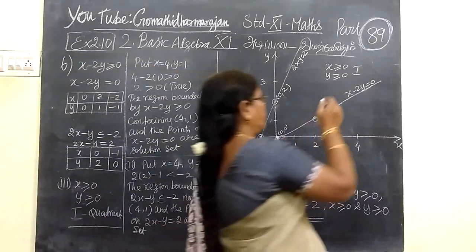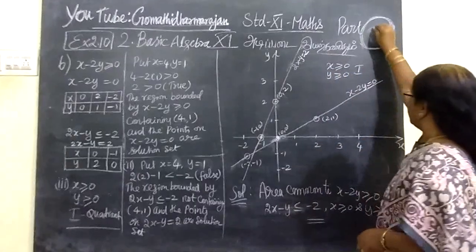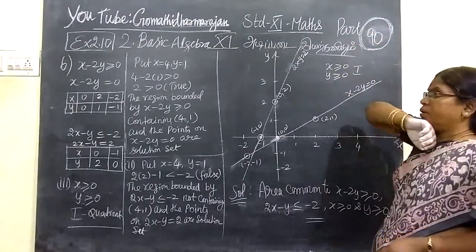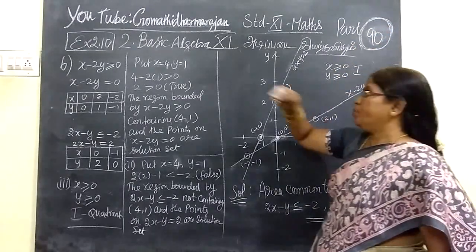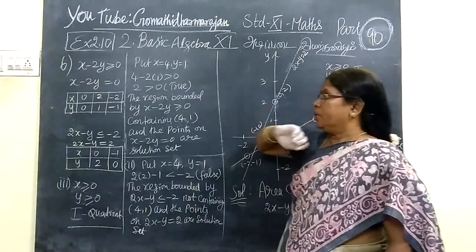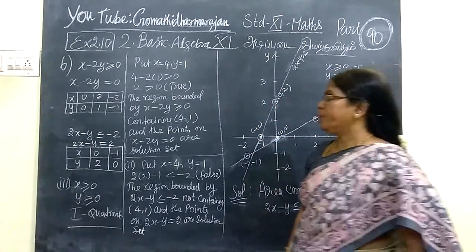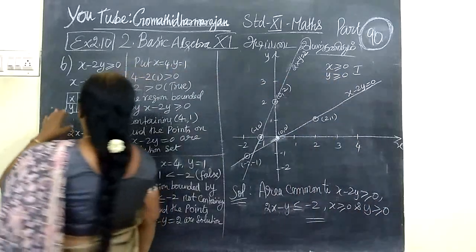So, now we see next part which is part 19 and we exercise 2.10 basic algebra as a question number 6 is x minus 2 by x equal to 0.